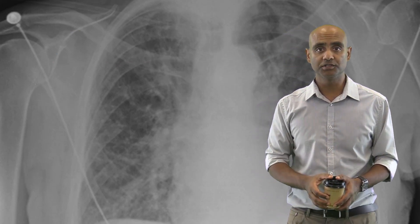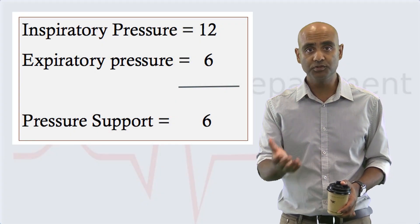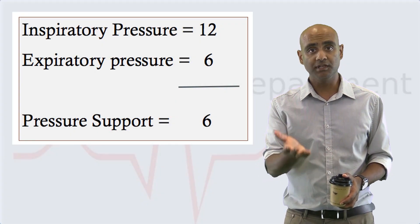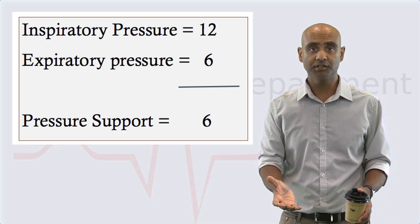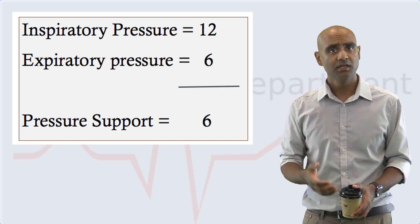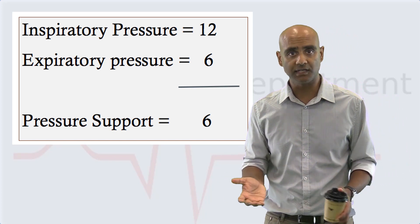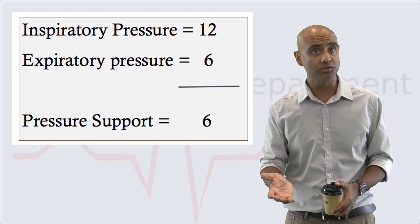He started on an inspiratory pressure of 12 centimetres of water, and his current expiratory pressure is increased to 6 centimetres of water to address his ongoing hypoxia. As we know, we'll have to turn down his FiO2 to address at least partially his hypercapnia. His FiO2 is turned down to 22%.